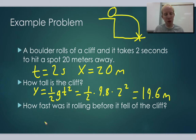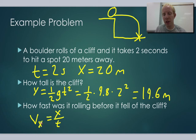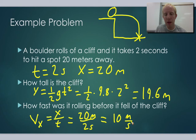Now we want to know how fast the boulder was rolling before it fell off the cliff — we're looking for velocity in the x direction. We know that velocity equals change in x position over time. We do 20 meters over 2 seconds, and that leaves us with 10 meters per second. So we can figure out both how fast it was rolling off the cliff and how tall the cliff was.